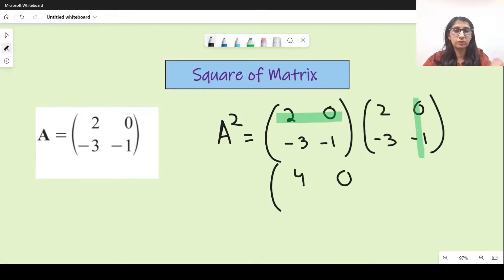If you haven't seen the video on multiplication, please do, because right now I'm just cruising through it assuming that you already know it. So that's minus six plus three, which is minus three, and the last one is zero.